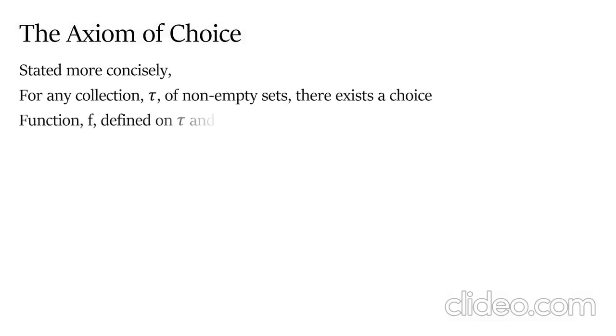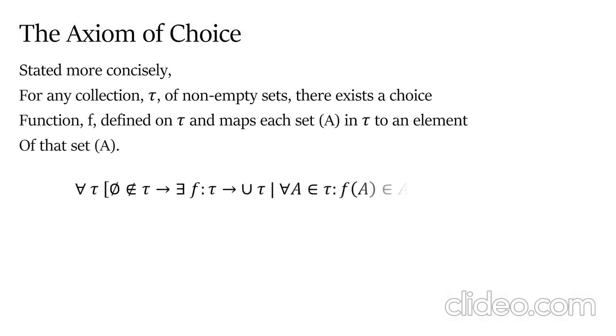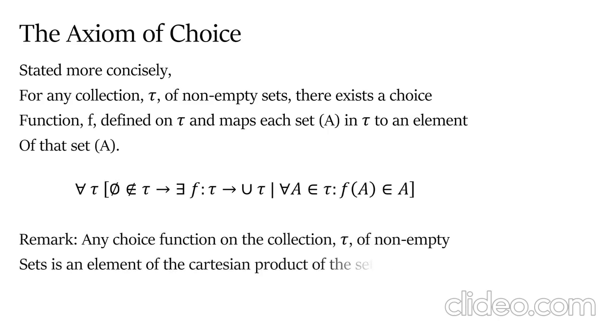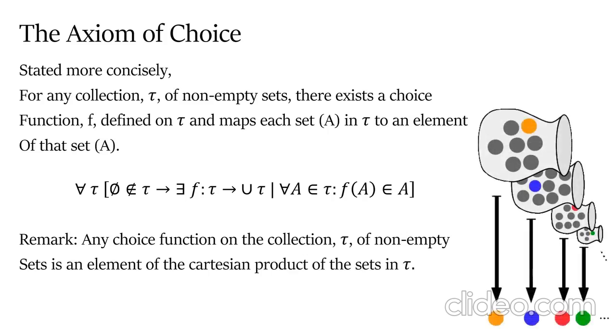Stated more concisely: for any collection τ of non-empty sets, there exists a choice function f defined on τ that maps each set A in τ to an element of that set. In mathematical terms, for any collection such that it's not empty, there is some choice function that maps from the collection onto the union of those sets belonging to the collection. The function maps onto itself, so any set that is mapped from the collection using the choice function must be a member of that set.